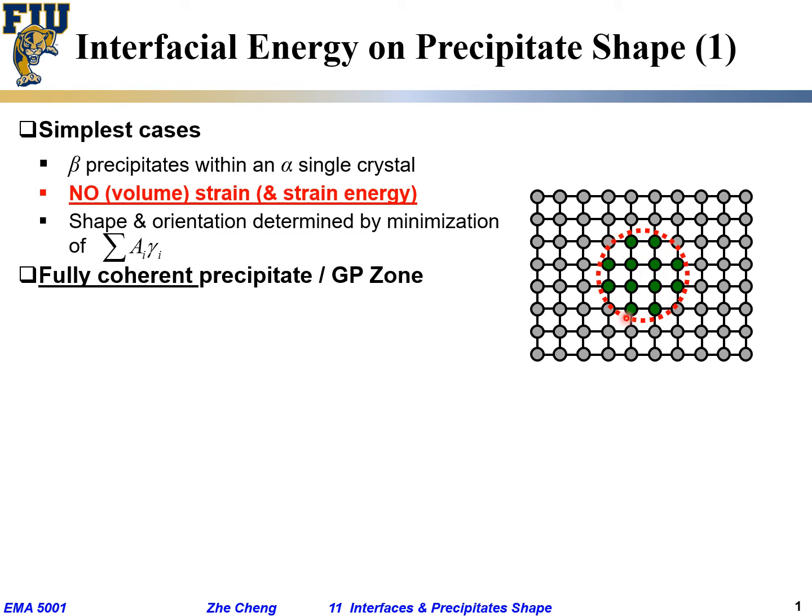Crystal structure, and the lattice parameter match pretty closely, okay? And they would have so-called the fully coherent precipitate, which means it's just a perfect match everywhere. And what would the shape of this look like?